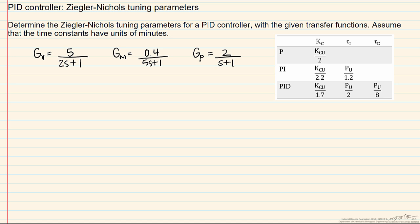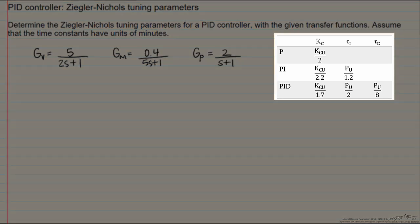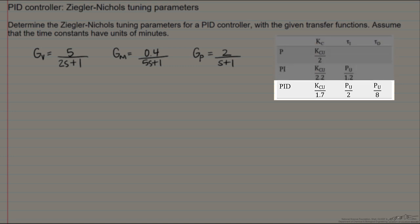In this screencast we will take advantage of the use of transfer functions in order to determine a good start for tuning parameters for a process. We will look at a system with given transfer functions for the valve, sensor transmitter, and process, and develop tuning parameters for a PID controller. Provided on the right-hand side is a table of the Ziegler-Nichols tuning parameters. For a PID controller we would want to take advantage of this row.